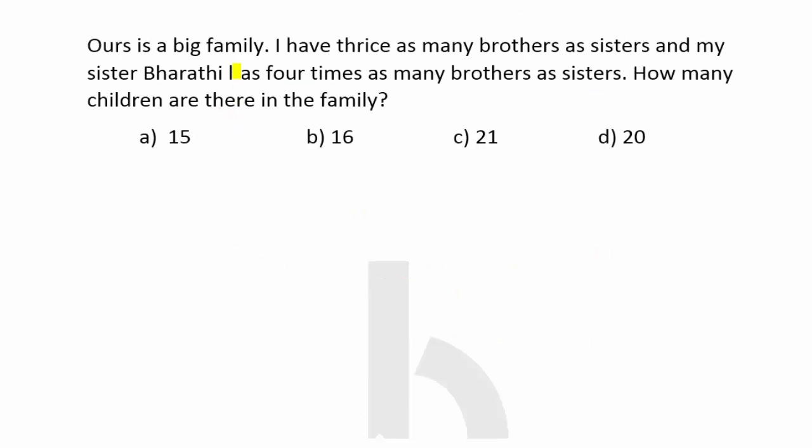In this question, ours is a very big family. I have thrice as many brothers as sisters, whereas my sister Bharti has four times as many brothers as sisters. How many children are there in the family? Option A is 15 children, option B is 16, option C is 21, and option D is 20.